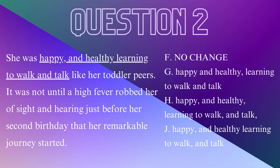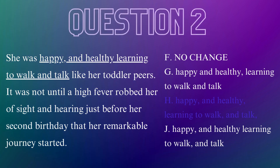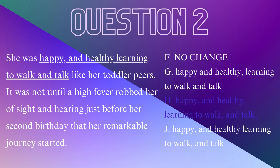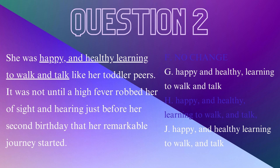Question 2. 'She was happy, and healthy, learning to walk and talk like her toddler peers.' Our answer choices include a variety of comma placements. Which choice has simply too many commas for no reason? You can rule out choice H right away. There shouldn't be a comma between 'happy' and 'and,' so F is also incorrect. For the same reason, J is also incorrect, leading us to G: 'She was happy and healthy, learning to walk and talk.' G is the correct answer.